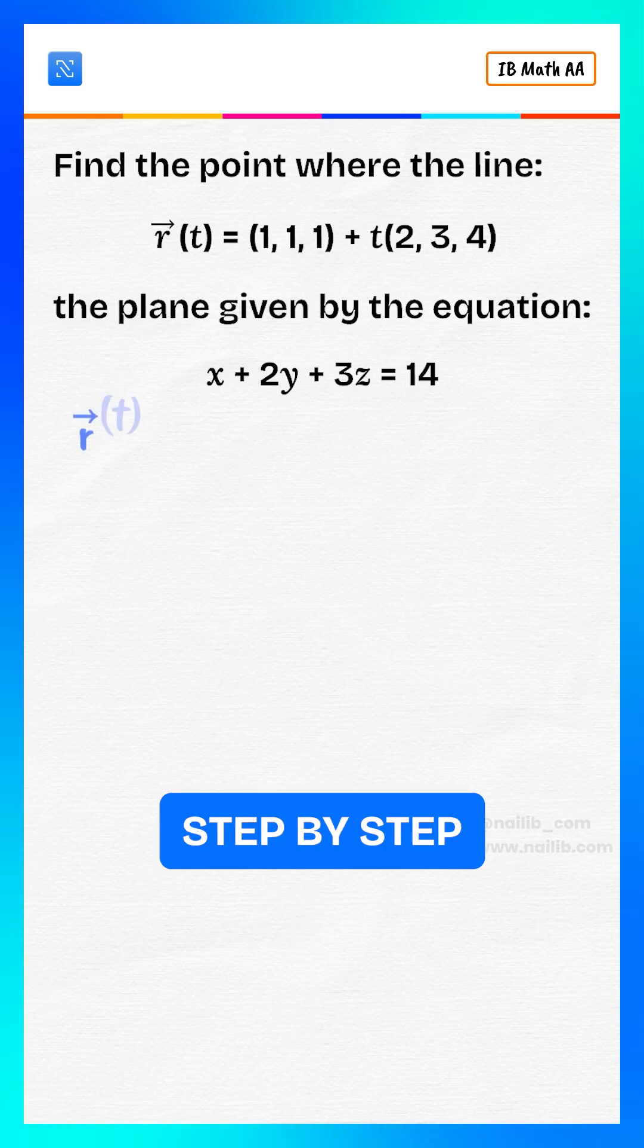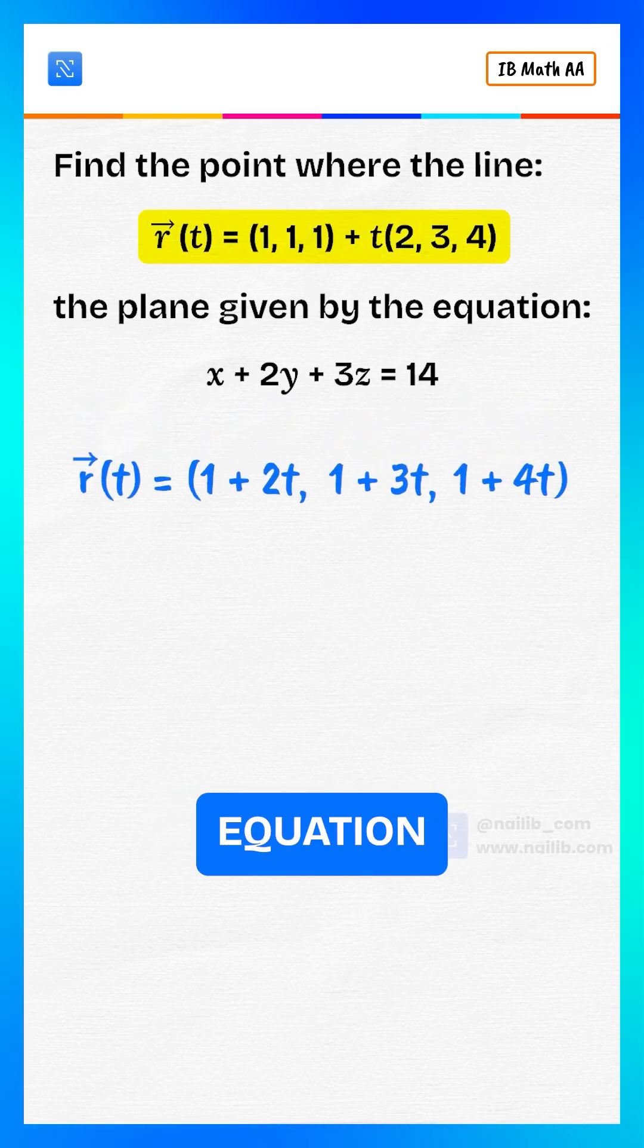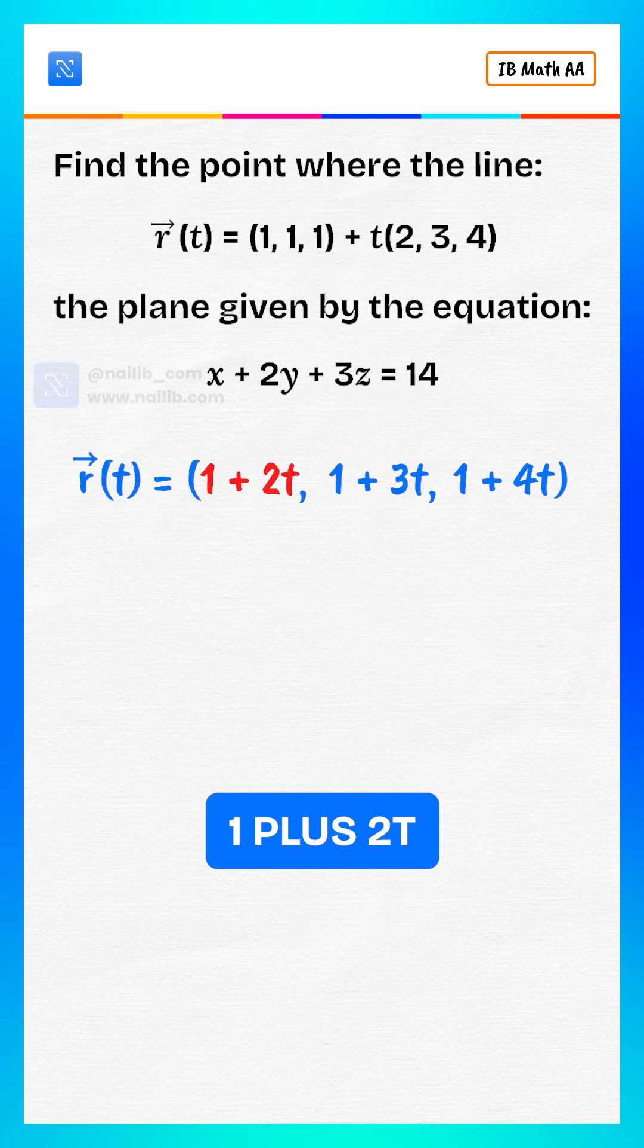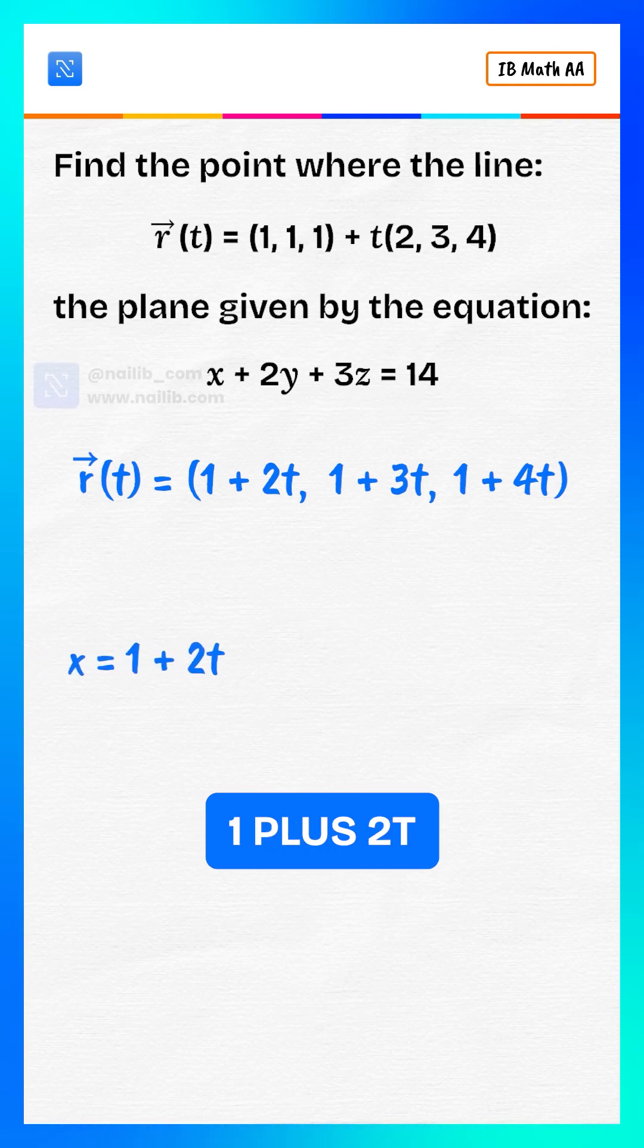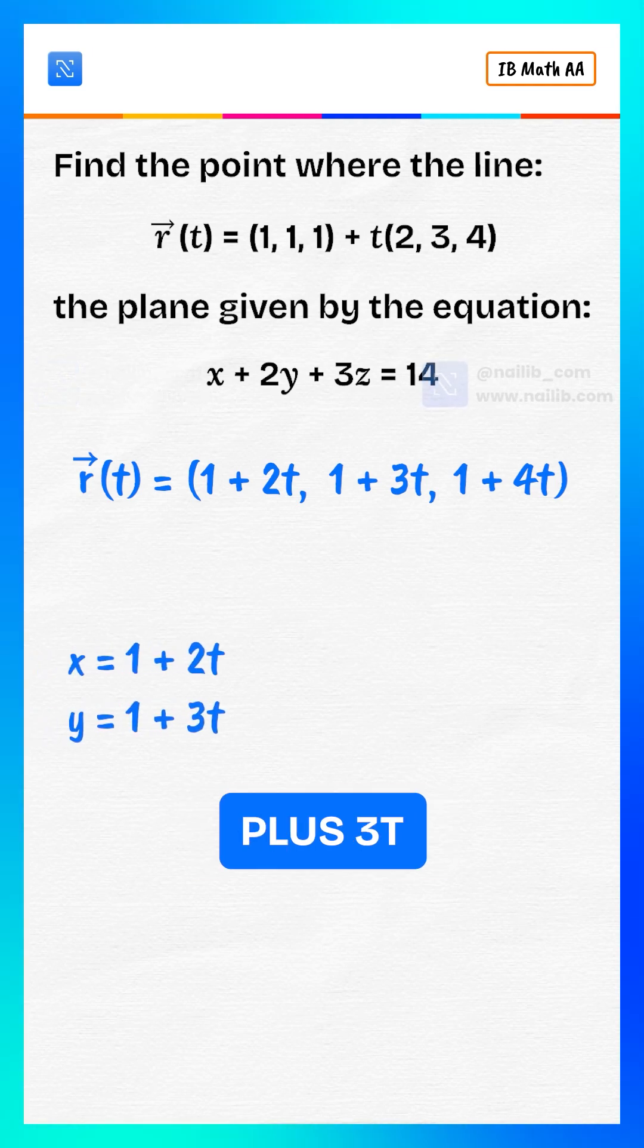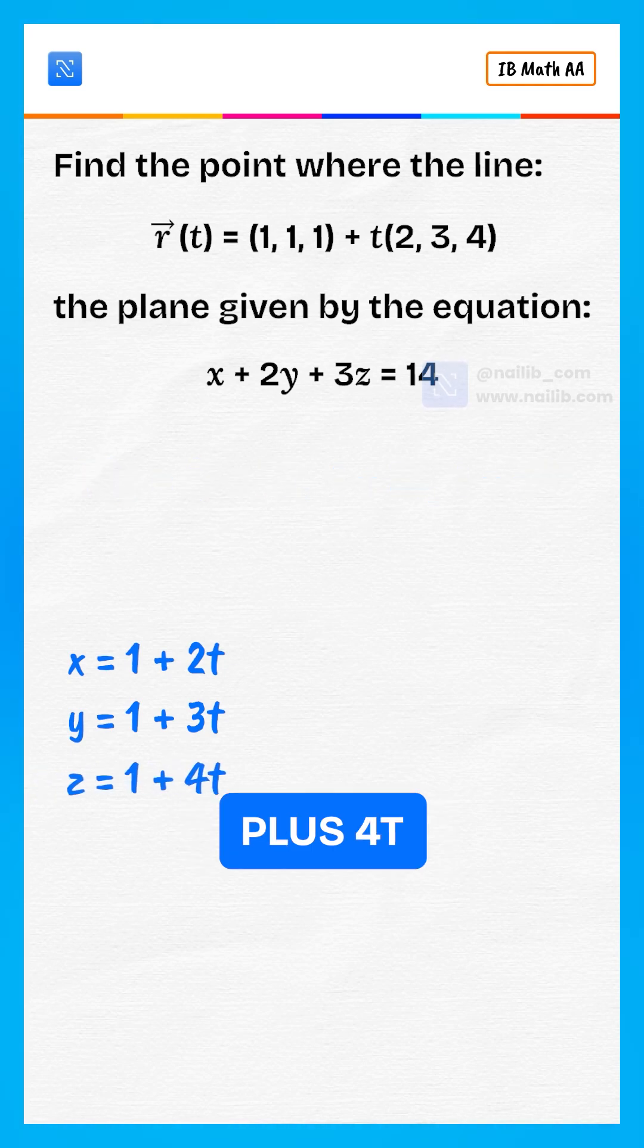Let's solve step by step. From the line equation, r of t equals 1 plus 2t, 1 plus 3t, 1 plus 4t. So we get x equals 1 plus 2t, y equals 1 plus 3t, z equals 1 plus 4t.